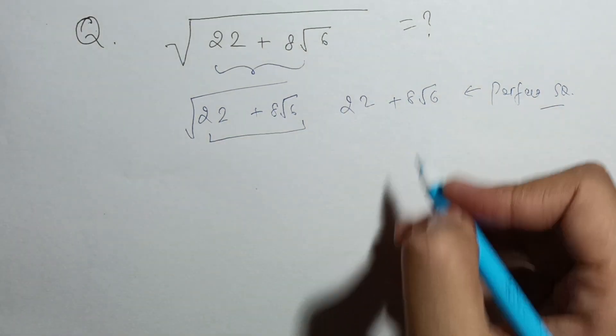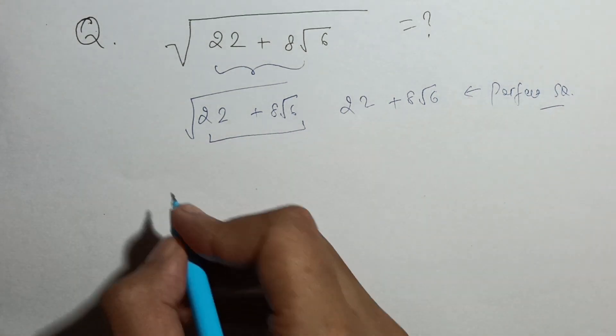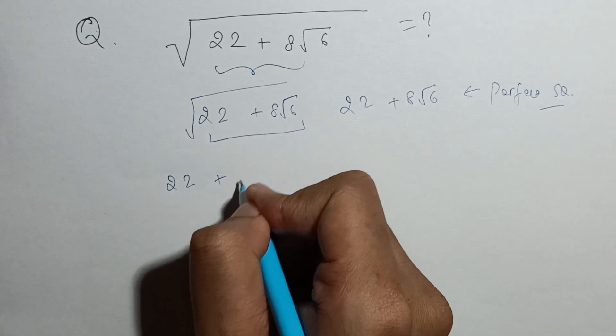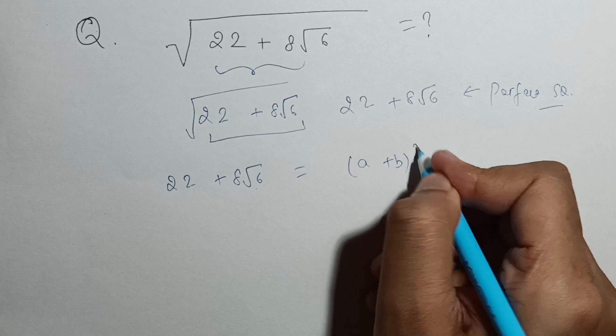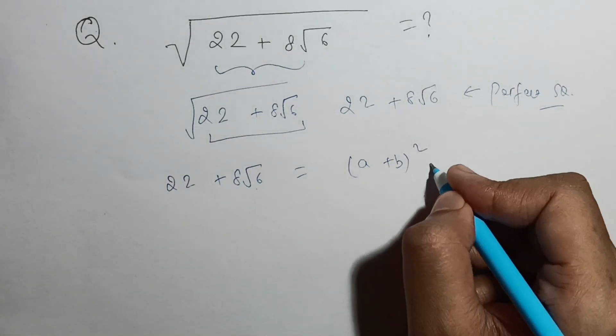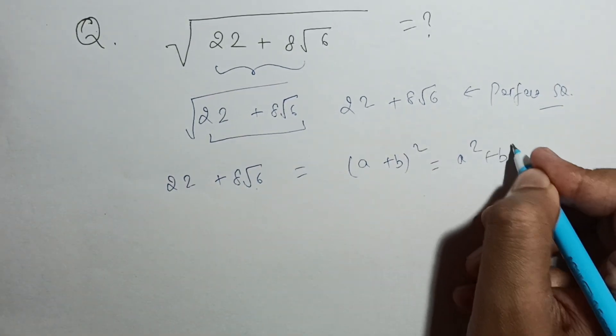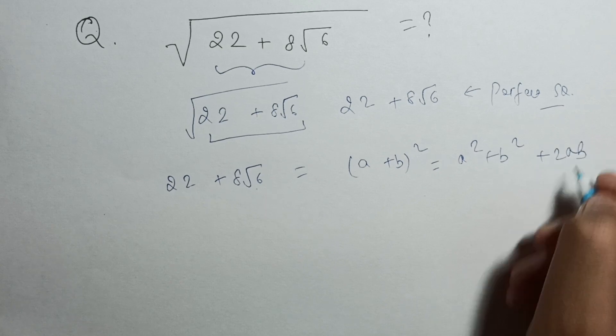So here we have a plus sign. How can we make it a perfect square? Let's say 22 plus 8 root 6 equals some a plus b whole square. Now if I expand this, I will get a squared plus b squared plus 2ab.